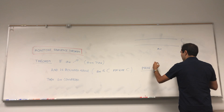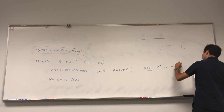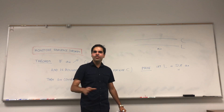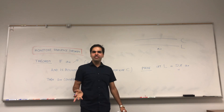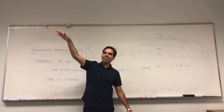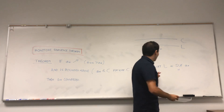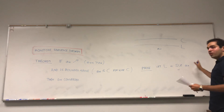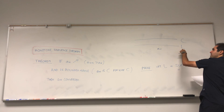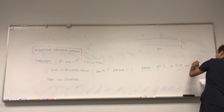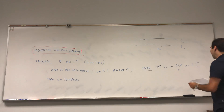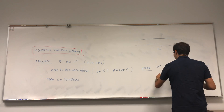It turns out there's a concept in analysis called the supremum which remedies that. In case you're familiar with supremum, the answer is simply the supremum of a_n. Let L be the supremum over n of a_n. The supremum is like a maximum value except it's not necessarily attained. In the previous example, the supremum of arctangent would be π/2, because everything is smaller than it but it's not necessarily attained.